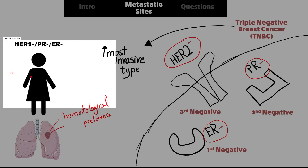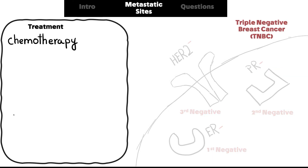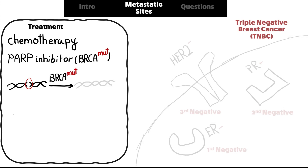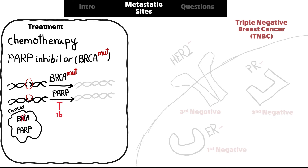Treatments for triple negative breast cancer include: first, chemotherapy; second, PARP inhibitors for BRCA-mutated breast cancers. The BRCA gene is responsible for repairing double-stranded DNA breaks. If mutated, it cannot perform this function. PARP is responsible for repairing single-stranded DNA damage. Therefore, a PARP inhibitor blocks this repair pathway. If a cancer cell has a mutated BRCA and an inhibited PARP, it will die due to insufficient DNA repair.